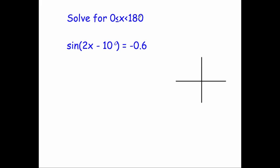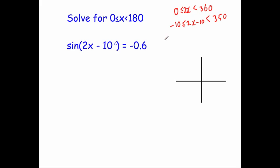We've got x between 0 and 180, but we want 2x minus 10, so we're going to multiply by 2 to get 2x and 360. Then we're going to take away 10 to get negative 10, 2x minus 10, and 350. So we've changed our values for x to 2x minus 10.